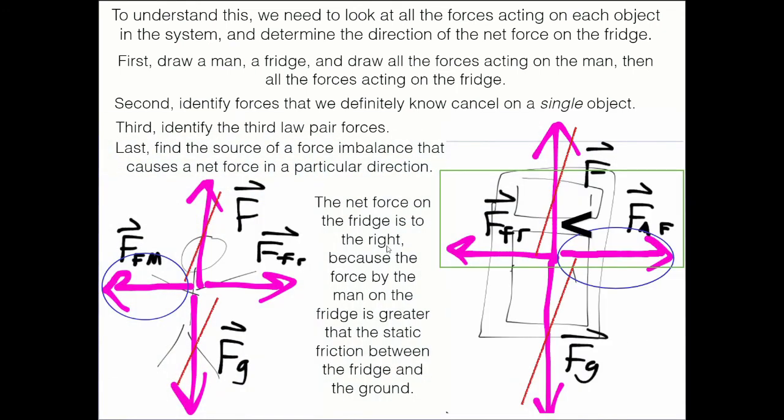And so the fridge can actually start accelerating to the right if the man with F-M-F can overcome, through exerting that force, friction. So the net force on the fridge would be to the right because the force by the man on the fridge is greater than the friction. It's actually called static friction. We'll talk about that a little later, between the fridge legs, the little pegs that the fridge has on the ground. So he's overcome that, caused the net force forward, thus the fridge will move forward.